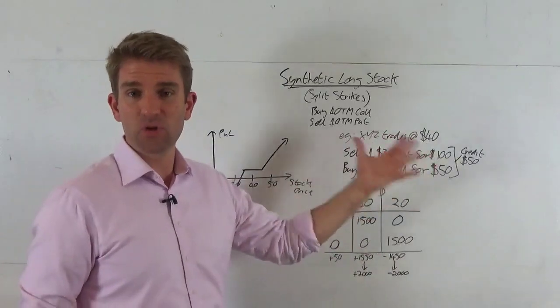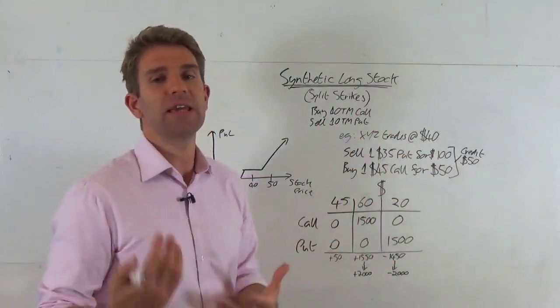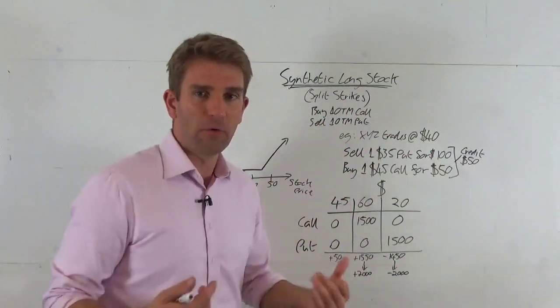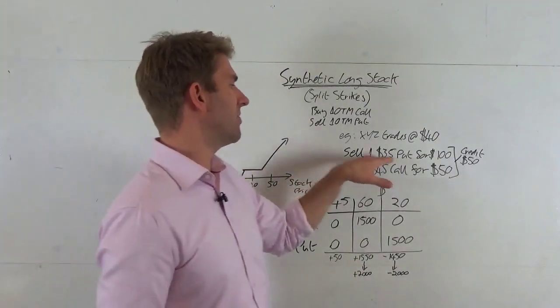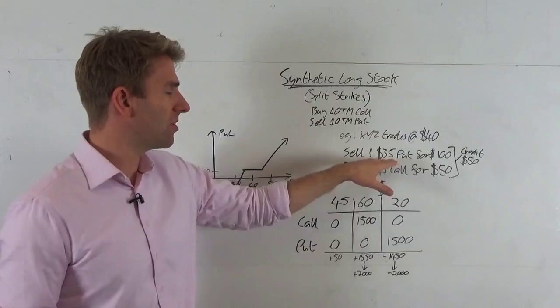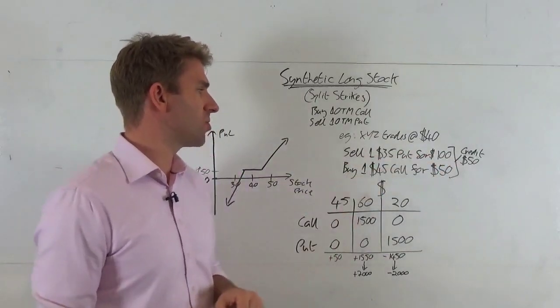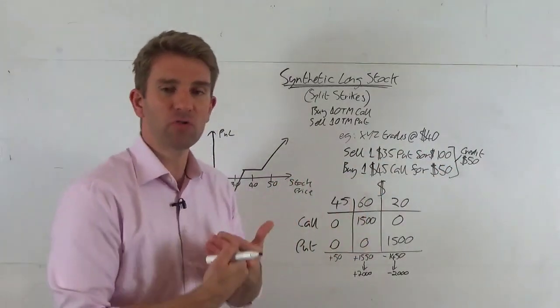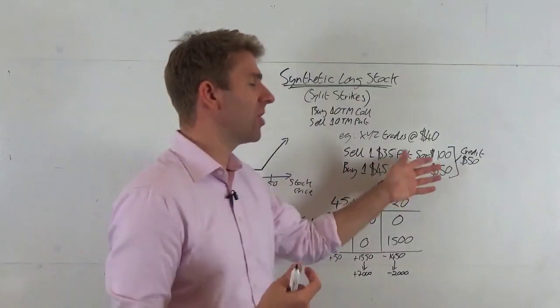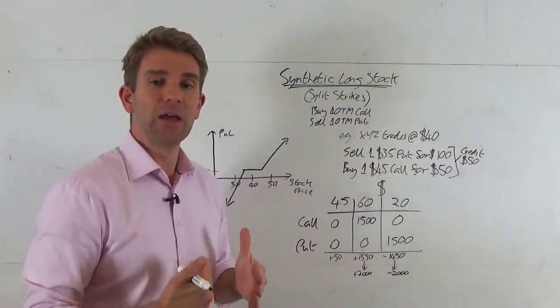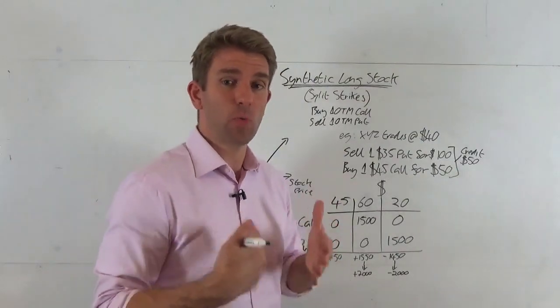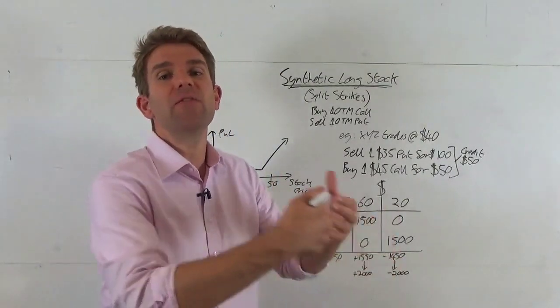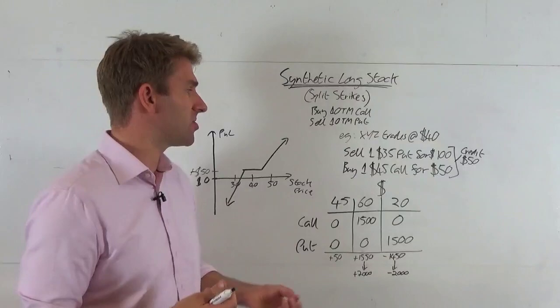XYZ is currently trading 40 bucks. That could be a stock, it could be a commodity index, whatever. Let's assume it's a stock for this example. We're going to sell this out of the money put which is 35 for $4, so we receive $100 back. Don't forget that would be trading at one dollar but we're selling one contract and 100 shares is one contract in the options market.